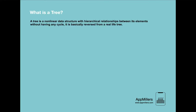Let's get started. By definition, a tree is a nonlinear data structure with a hierarchical relationship between its elements without having any cycle. It's basically the reverse form of a real tree. As with other data structures, we use tree data structures in our daily lives — let's see where.